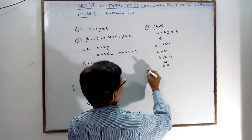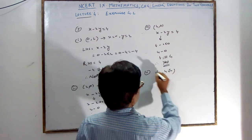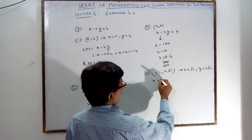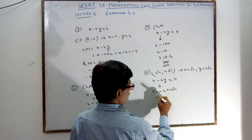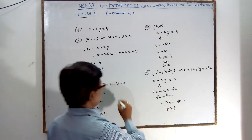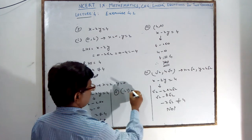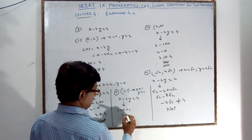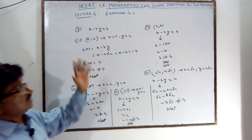Fourth: (√2, 4√2) means x = √2, y = 4√2. LHS = √2 - 2(4√2) = √2 - 8√2 = -7√2. Since -7√2 ≠ 4, it is not a solution. Fifth: (1, 1) means x = 1, y = 1. LHS = 1 - 2(1) = -1. Since -1 ≠ 4, it is also not a solution.